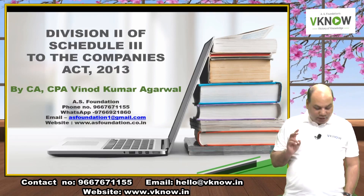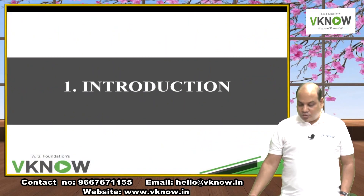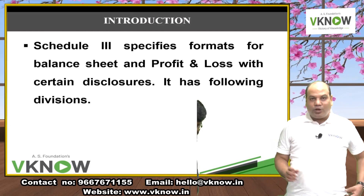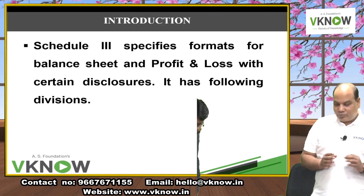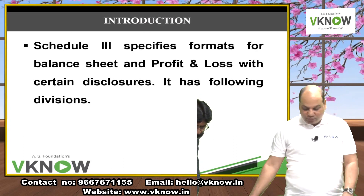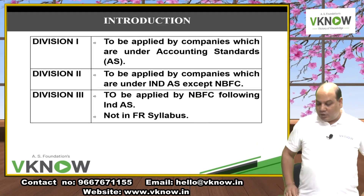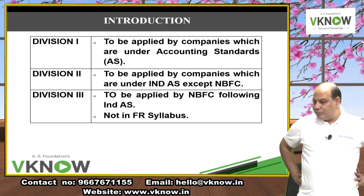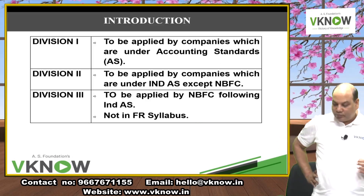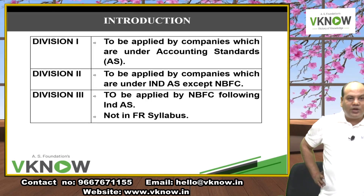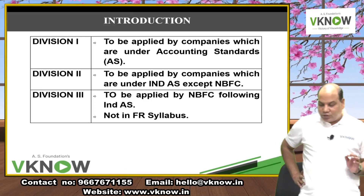Schedule 3 has three Divisions: Division 1, Division 2, and Division 3. Pick up your pencil and write this down. Division 1 is to be applied for companies which are under Accounting Standards — that is, non-Ind AS companies.